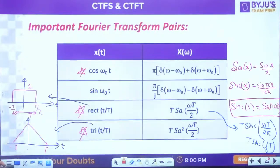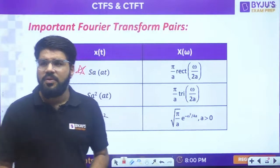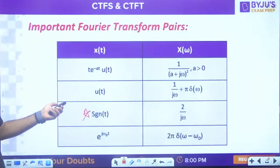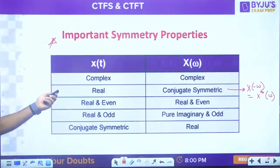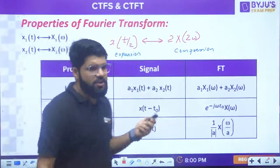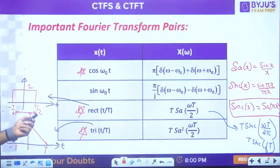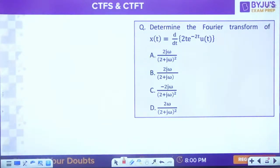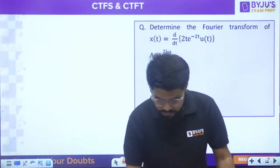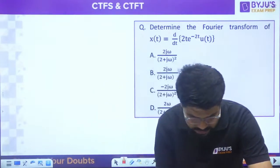Now we have revised important Fourier transform pairs, properties, Parseval's theorem, area application, and basic conditions. Let's go to the first question. Determine the Fourier transform of x(t) = d/dt of [2t·e^(-2t)·u(t)]. Some miscellaneous properties will be used here. Try to attempt this question.